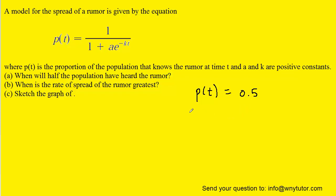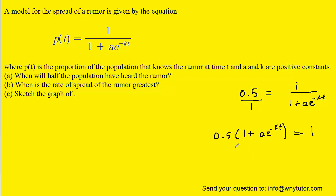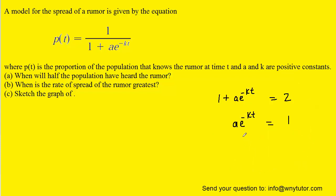We'll substitute in 0.5 for p(t). Our objective is then to solve for t. One way of doing that would be to place this over one and then cross multiply. We could next divide both sides of the equation by 0.5, and then subtract one from both sides, and then divide both sides by a.